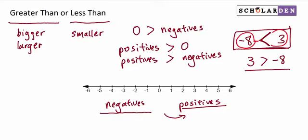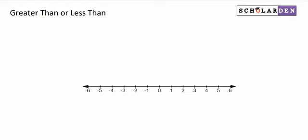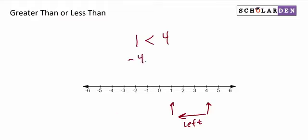Let's talk some more about less than. A greater or larger number is to the right of a smaller number, and the opposite is true too — a smaller number is to the left of a greater number. With positives it's pretty intuitive. For instance, 1 is less than 4, because 1 is to the left of 4. With negatives, it's a little counterintuitive, because negative 4 is actually less than negative 1, because negative 4 is to the left of negative 1.